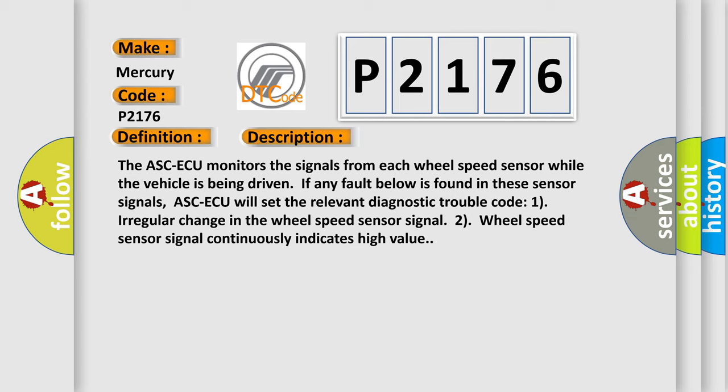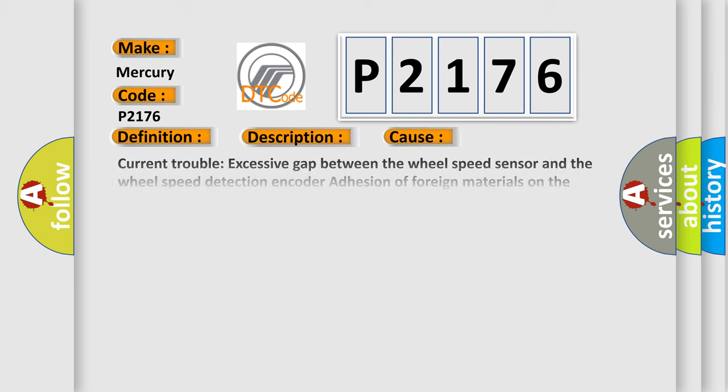One, irregular change in the wheel speed sensor signal. Two, wheel speed sensor signal continuously indicates high value. This diagnostic error occurs most often in these cases.